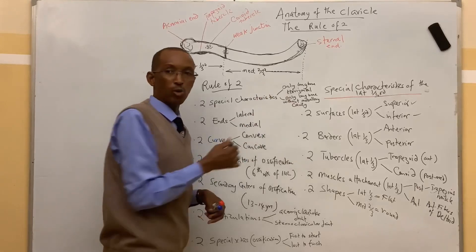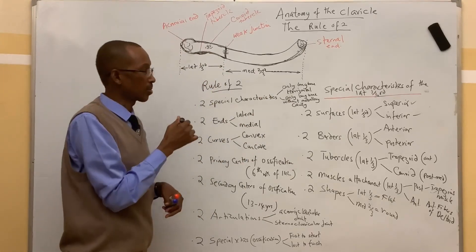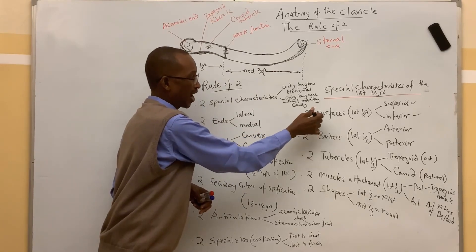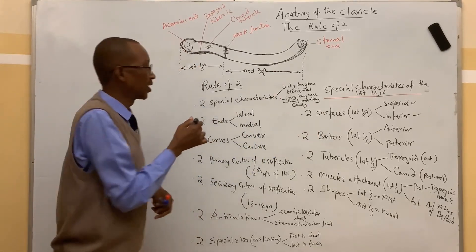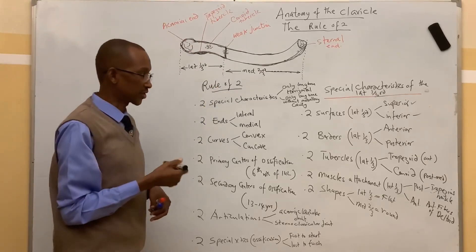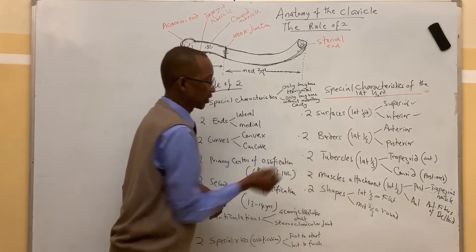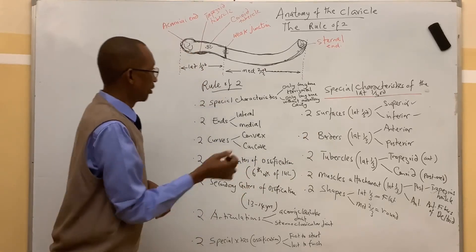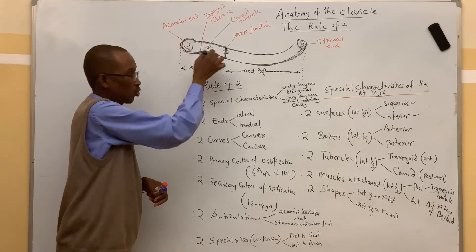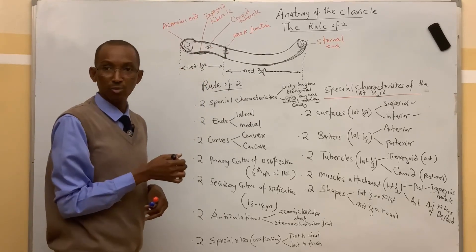Looking at the lateral one-third of the clavicle, it also has special characteristics. The lateral one-third has two surfaces: a superior surface and an inferior surface. It also has two borders: the anterior border, which is concave forward, and the posterior border, which is convex backwards.